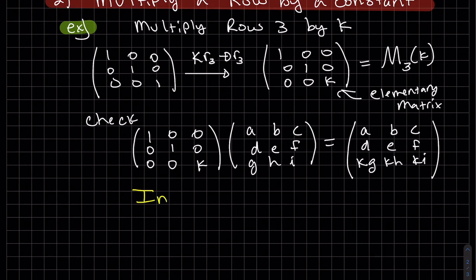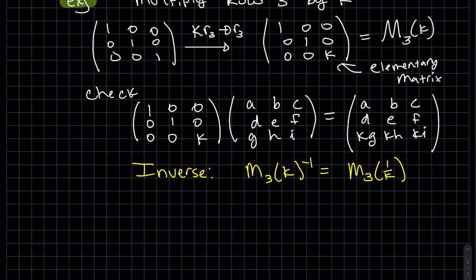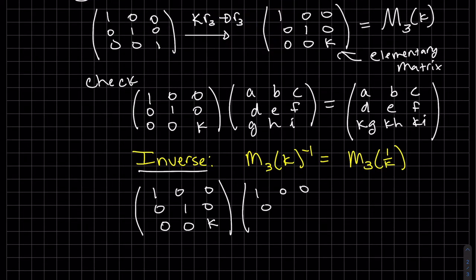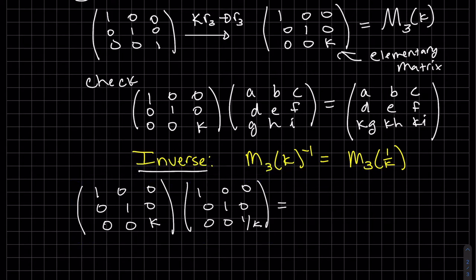Let's try it. So I claim that when you multiply K times one over K, I'll get our identity matrix back. Multiply these two. This last times that last is K times one over K, which is one.